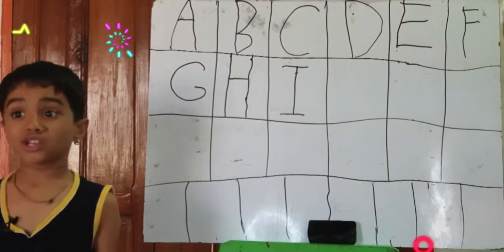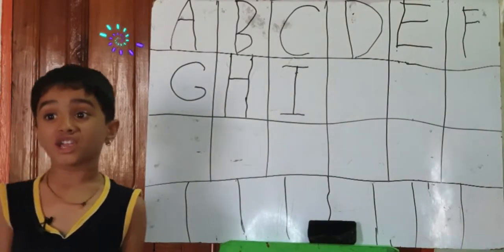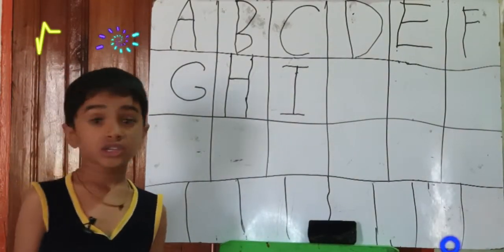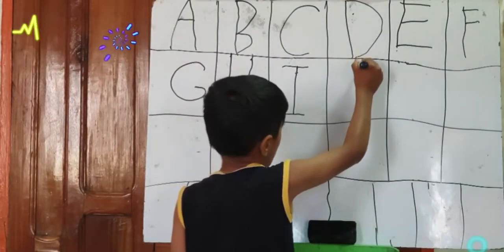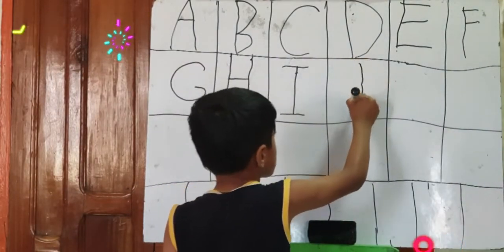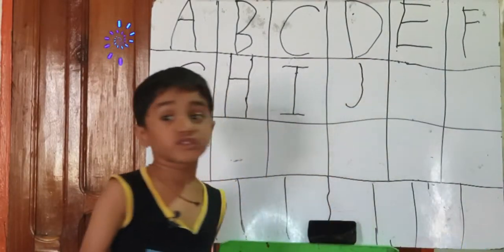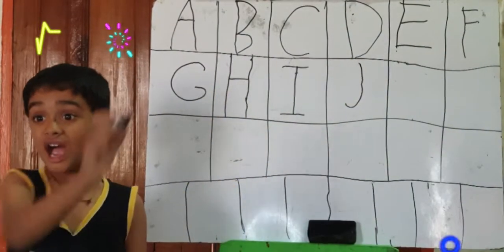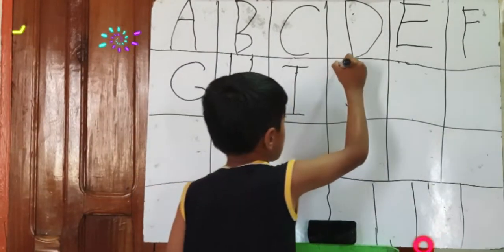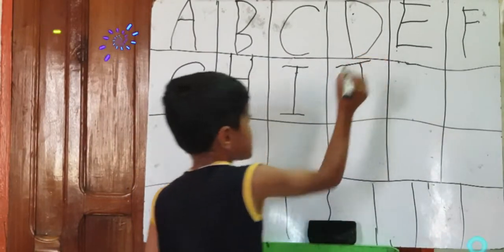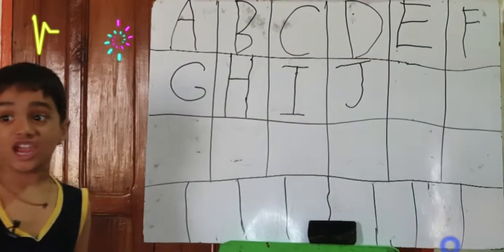Now we are going to learn J. One standing line, one sleeping line, one sleeping line. One curve. That is J.